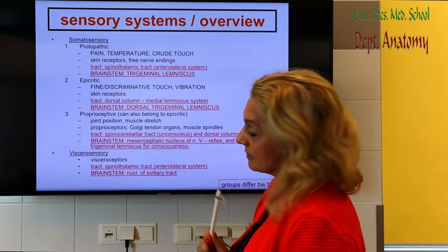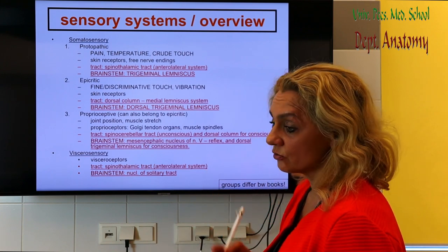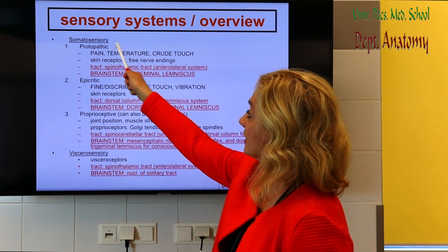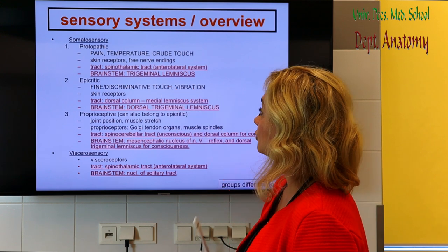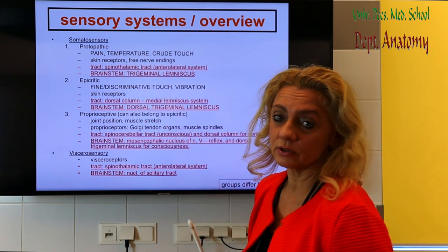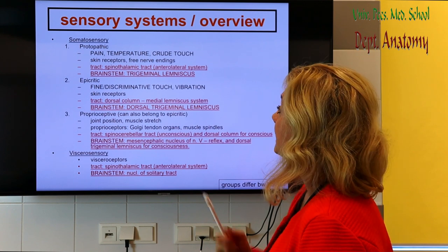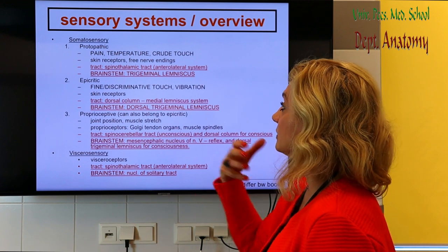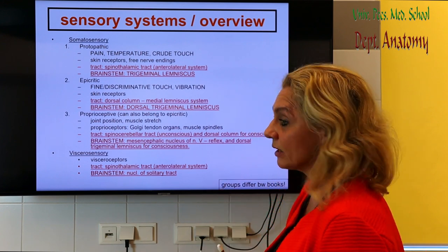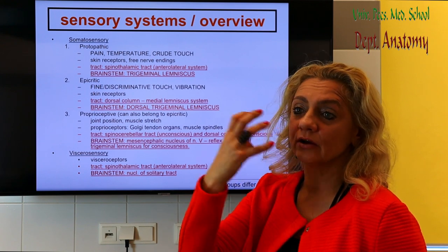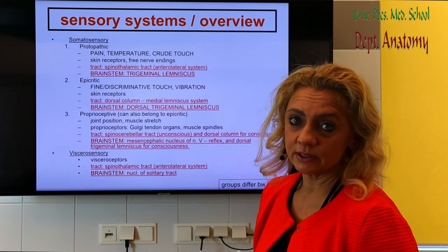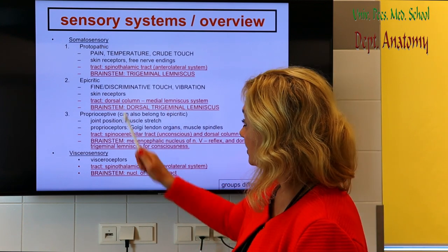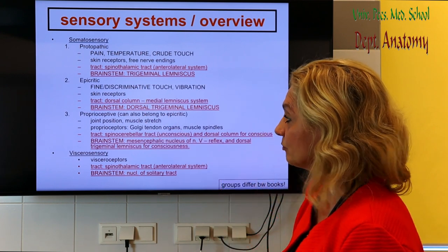This is the table or chart I already showed you at the spinal cord lecture. You can see that for protopathic — pain, temperature, and crude touch — the tract in the spinal cord is the spinothalamic tract, and in the brainstem we have the trigeminal lemniscus with the same sensory quality. In the area of the face and head, we have the trigeminal nerve as the main sensory nerve. For epicritic — fine discriminative touch, vibration, pressure —